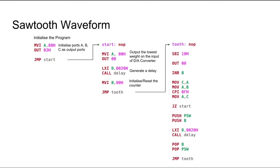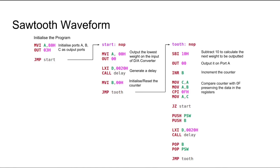For the first subroutine, we would be generating the value of the accumulator and we would be outputting it. Then, we would be incrementing the counter. Then, we would be checking if the counter has reached 0F. If it has reached 0F, then we would reset registers A and B. But if it does not reach 0F, then we would be continuing with this program.